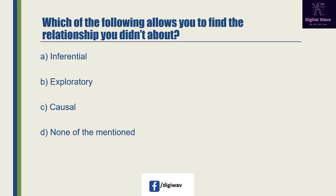Next question: which of the following allows you to find a relationship you didn't know about? Option A is 'inferential', option B is 'exploratory', option C is 'causal', and the last option is none of the mentioned. The right answer will be B: exploratory, because in statistics, exploratory data analysis is an approach to analyzing data sets to summarize their main characteristics, often with visual methods.